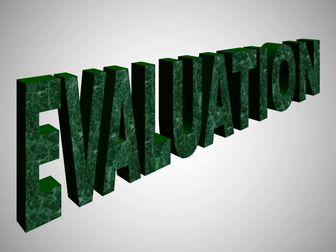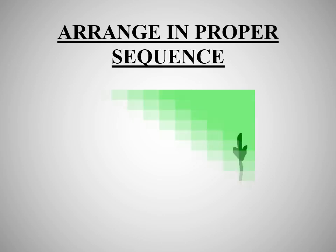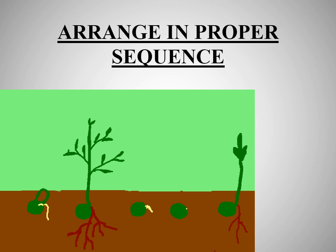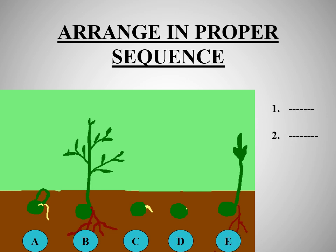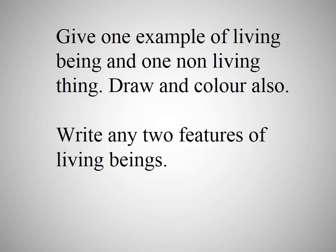Here is the evaluation part. Whatever you have seen or studied, let's have a recall. Arrange the different stages of germination in a proper sequence — A, B, C, D, E — and draw it in your notebook and write the answer. There is another question: draw and color one example each of a living being and a non-living thing. The next question: write any two features of living beings.